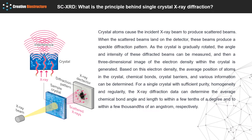What is the principle behind Single Crystal X-ray Diffraction? X-ray crystallography uses X-rays to determine the position and arrangement of atoms in a crystal. The most classical method is Single Crystal X-ray Diffraction, in which crystal atoms cause the incident X-ray beam to produce scattered beams. When the scattered beams land on the detector, they produce a speckle diffraction pattern. As the crystal is gradually rotated, the angle and intensity of these diffracted beams can be measured, and then a three-dimensional image of the electron density within the crystal is generated.